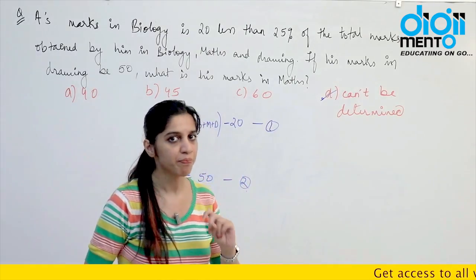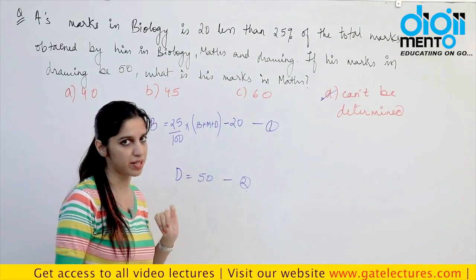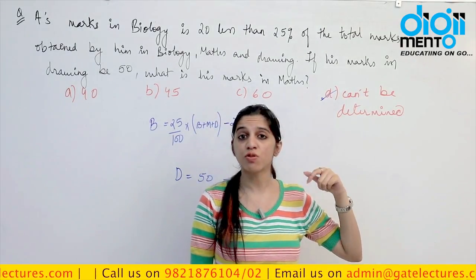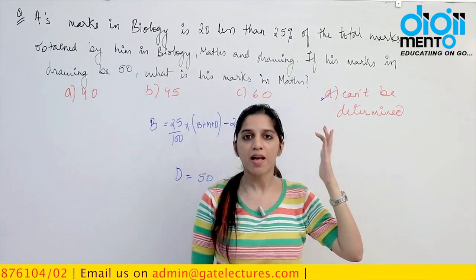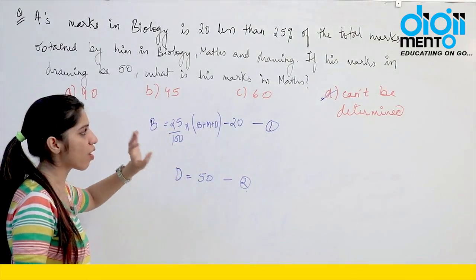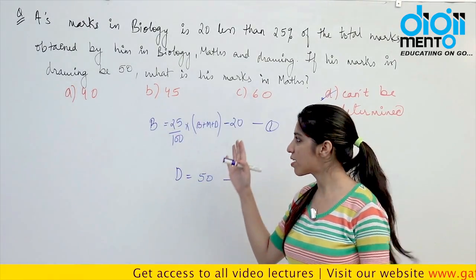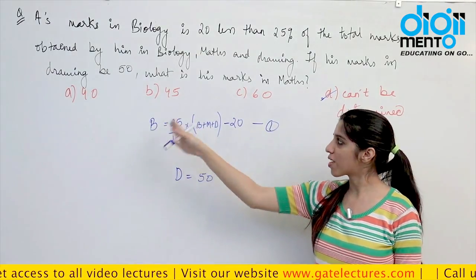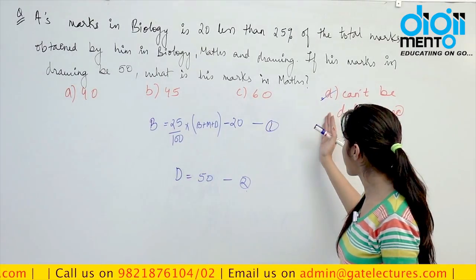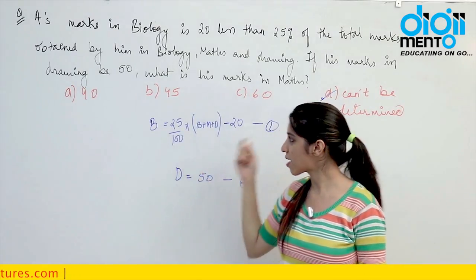I took this question to clarify two things: first, you need at least 3 equations to solve a problem with 3 variables. Second, sometimes questions have a 'cannot be determined' option — students avoid it because of a myth that every question must have an absolute answer. Do not hesitate to choose 'cannot be determined' when appropriate. With only 2 equations and 3 variables, marks in Maths cannot be determined. Answer is option D.